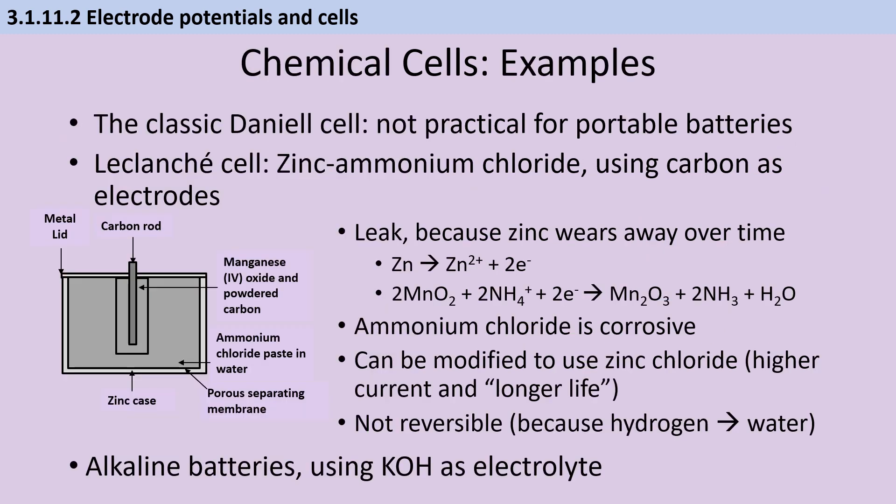In the AQA A-level chemistry exams, there aren't named examples of non-rechargeable cells, but the most regularly used example is the classic Daniell cell. This isn't practical for a portable battery, because it contains liquids that move around and could spill. The most common everyday cell is a zinc carbon cell. This has a zinc case functioning as the anode, and therefore the zinc loses electrons and over time it will wear away, causing the cell to split and leak, releasing the corrosive ammonium chloride electrolyte.